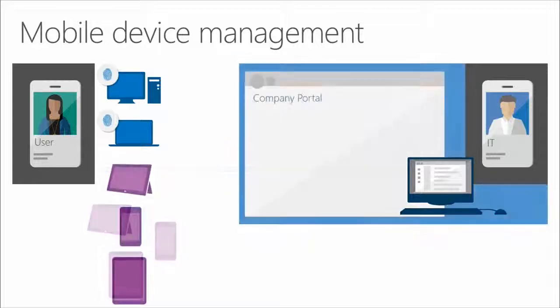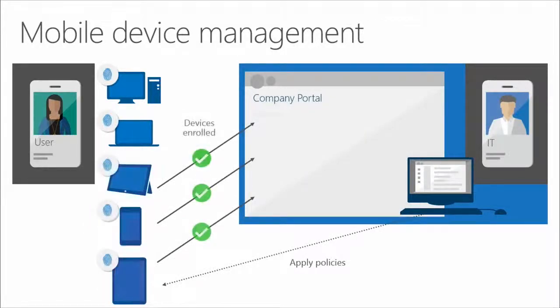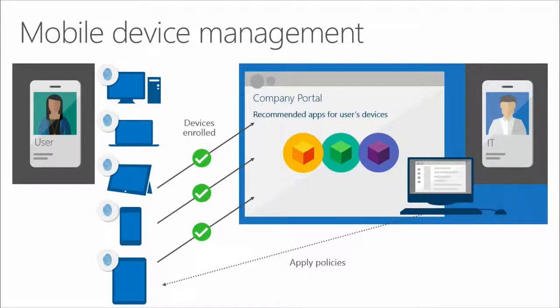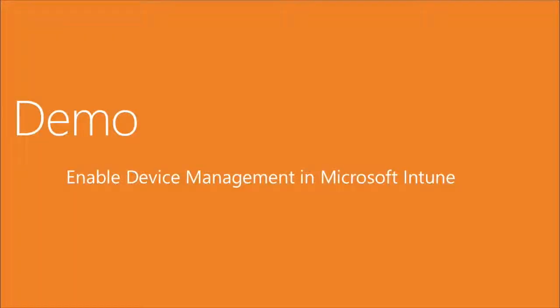Users in the company portal see applications recommended for them based on who they are, using an enrolled device. Applications shown are relevant to the device platform — on Windows Phone you won't see iOS apps. IT can apply policies, deploy certificates, create VPN profiles, and push email profiles. After enrolling, the user simply enters their password and email is configured on the device automatically. Simon will now demonstrate device management in Intune and how to get it enabled.